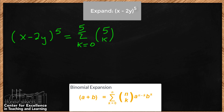We'll have a — for us, our a is x — to the n minus k. And then we'll have b — in our case, b is negative 2y — to the k power. We've filled in the formula: I've gone through and replaced all of the a's with x, all of the b's with negative 2y, and all of the n's with 5.